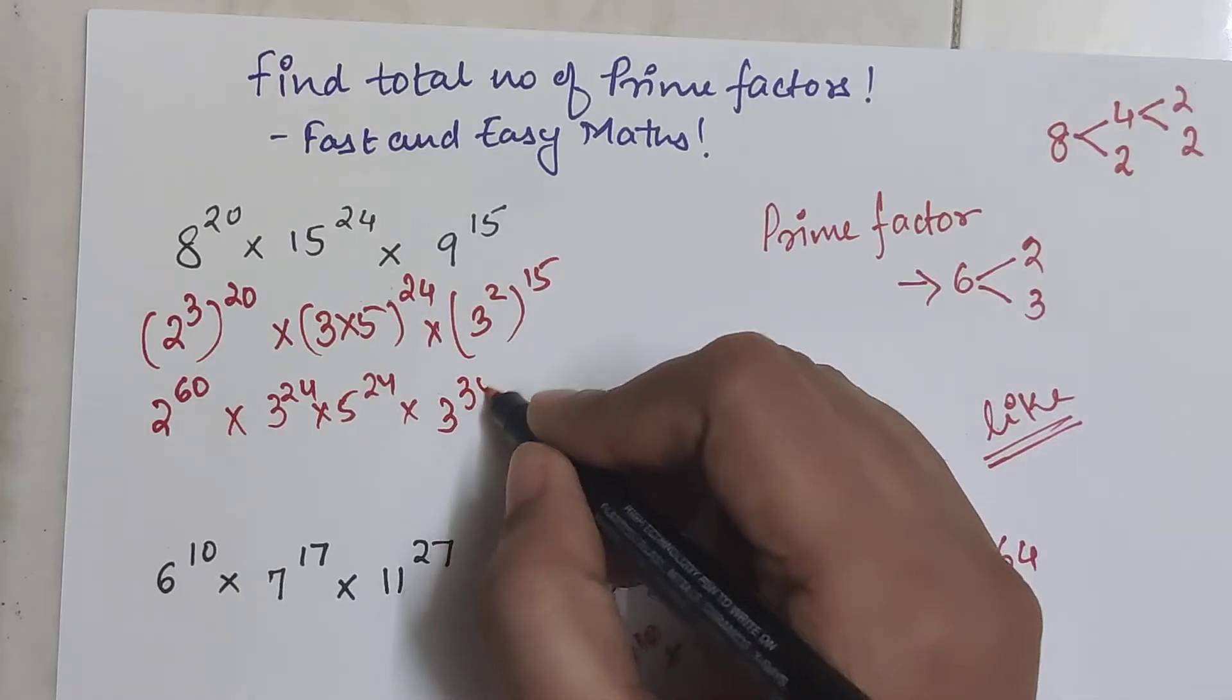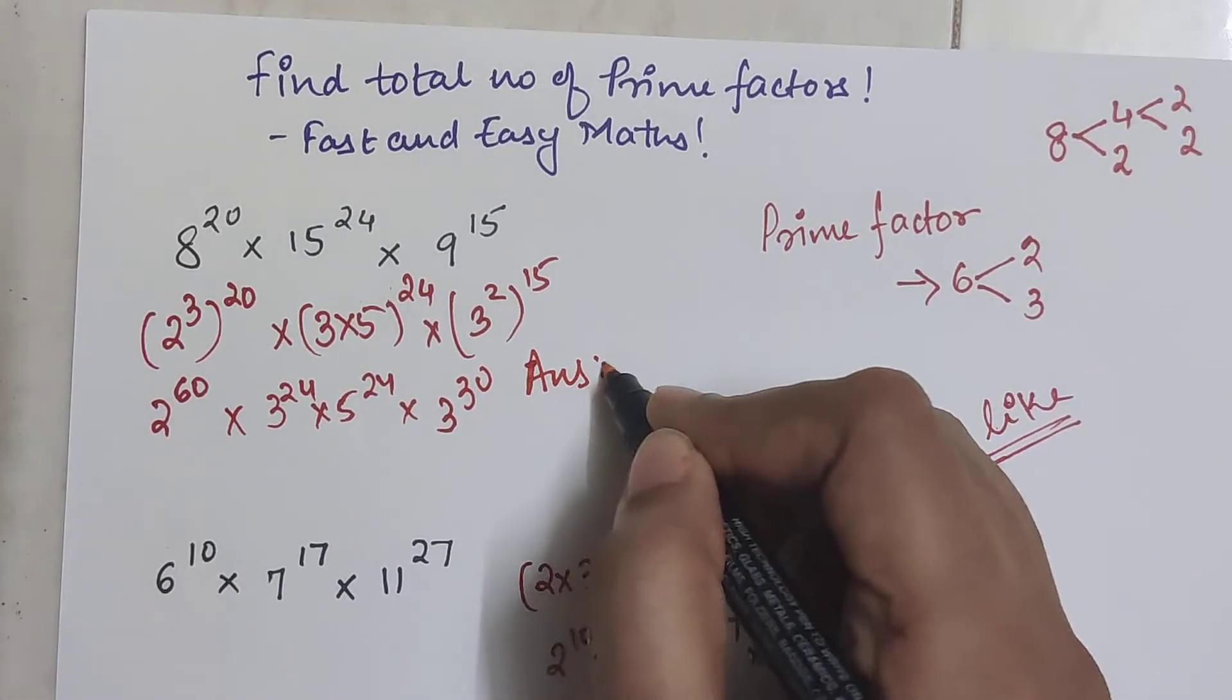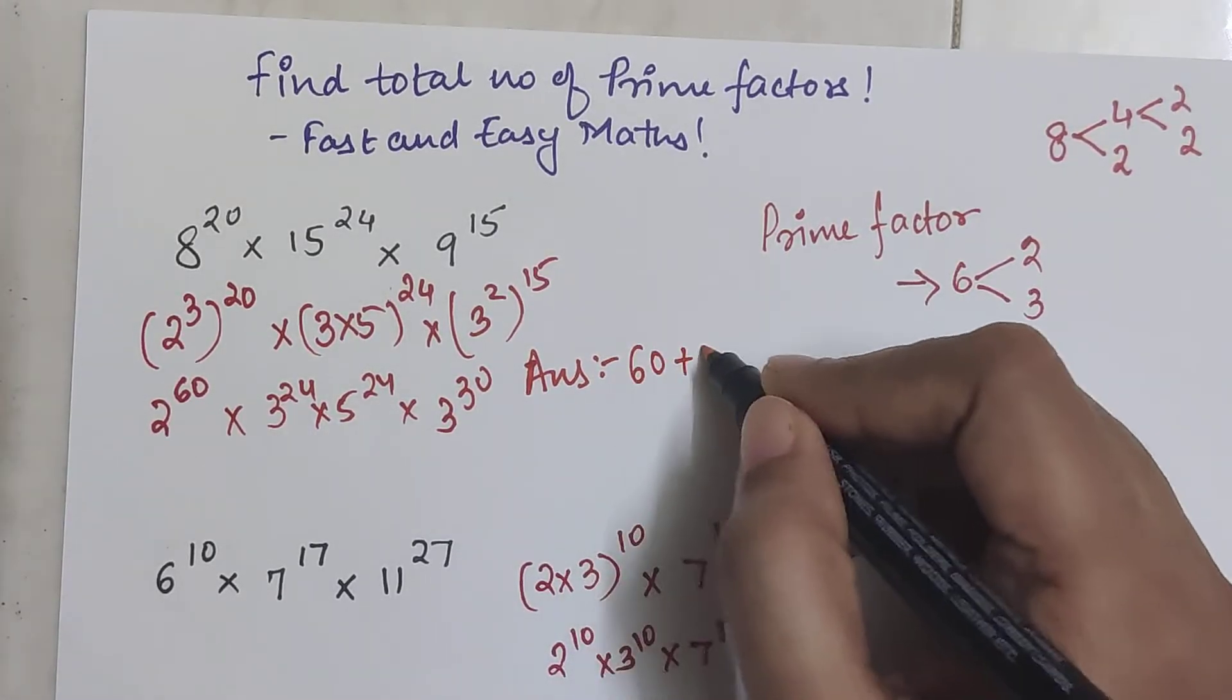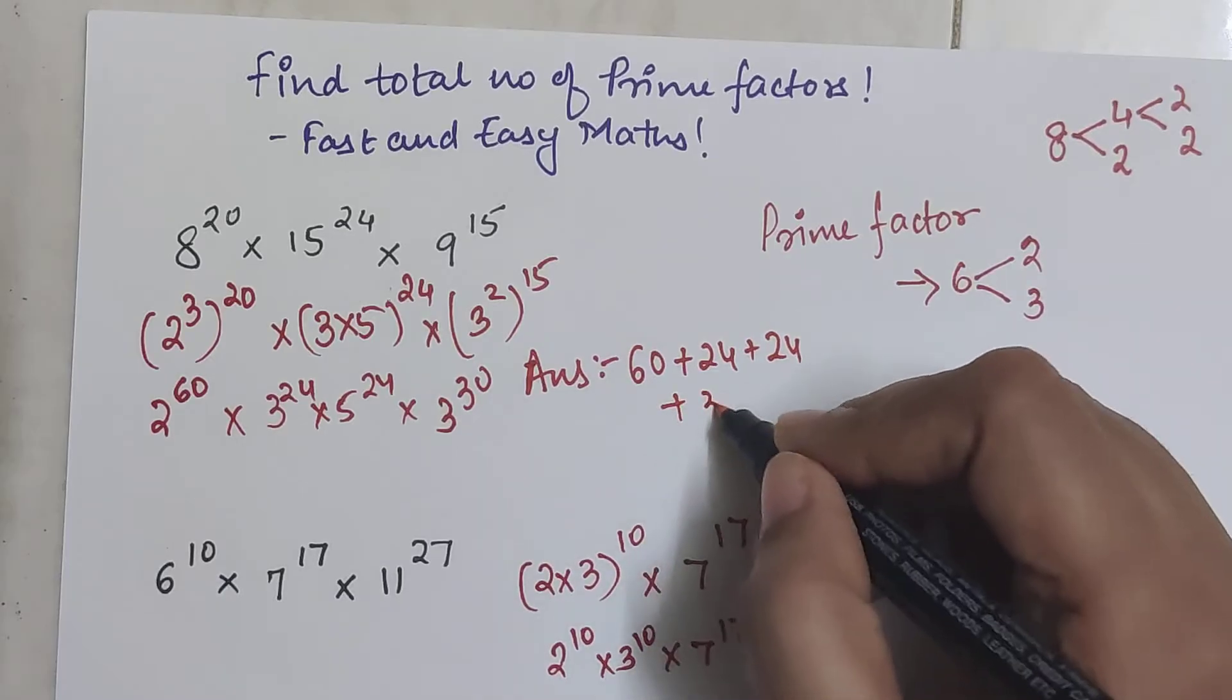So your final answer is now 60 plus 24 plus 24 plus 30.